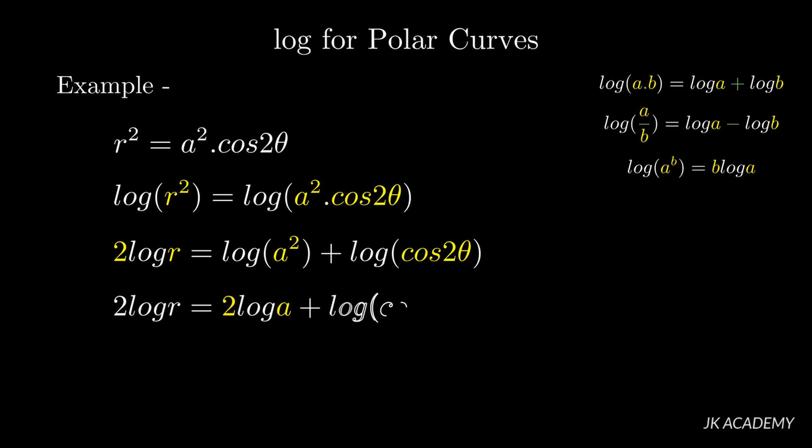So the result is 2 log a + log cos. These are the deductions we can do by using logarithm properties.